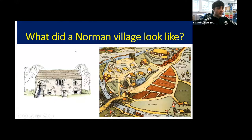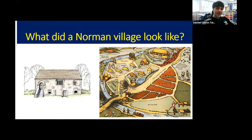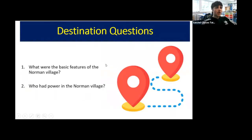Hello and welcome everyone to this lesson on what a Norman village looks like. Villages had existed long before the Norman conquest, long before William the Conqueror came over and defeated Harold Godwinson. Today's lesson looks at what villages looked like after the Norman conquest, after they came over and made their changes, although we will see that there were many continuities as well — many things that stayed the same from the Anglo-Saxon period.